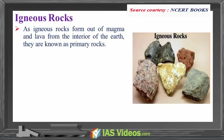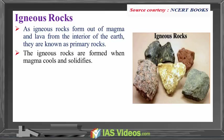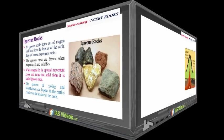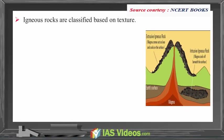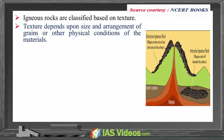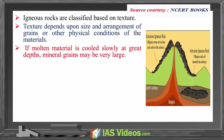Igneous rocks: as igneous rocks form out of magma and lava from the interior of the earth, they are known as primary rocks. The igneous rocks are formed when magma cools and solidifies. When magma in its upward movement cools and turns into solid form, it is called igneous rock. The process of cooling and solidification can happen in the earth's crust or on the surface of the earth. Igneous rocks are classified based on texture, which depends upon size and arrangement of grains or other physical conditions of the materials. If molten material is cooled slowly at great depths, mineral grains may be very large. Sudden cooling at the surface results in small and smooth grains.